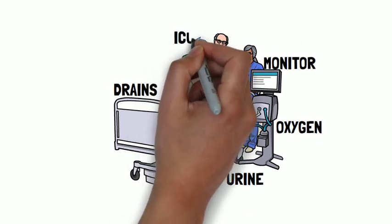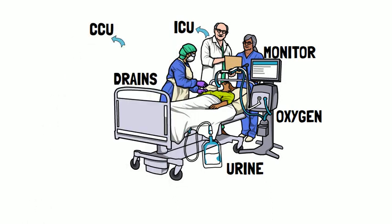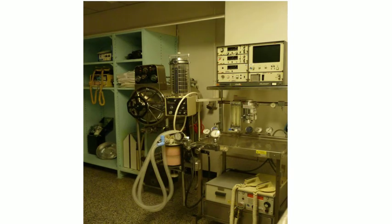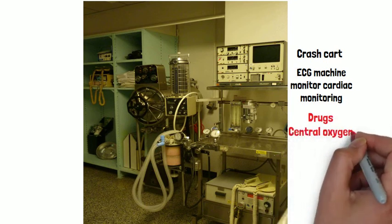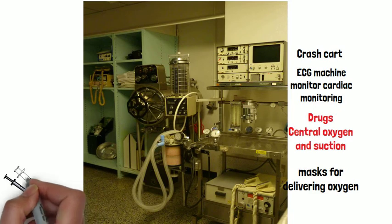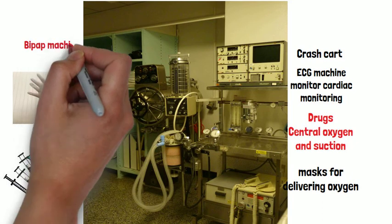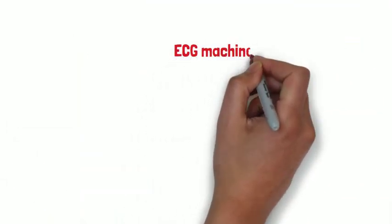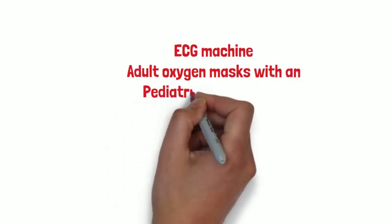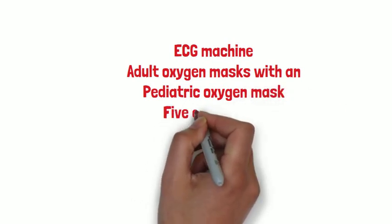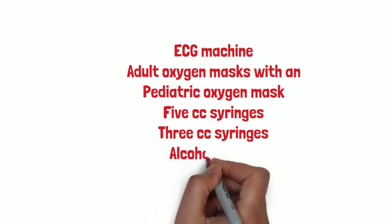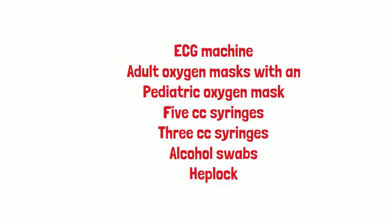The minimum equipment and drugs that should be readily available in the recovery area include a crash cart and intubation trolley, a BiPAP machine, and equipment for taking an ECG and continuous heart monitoring. Essential drugs include atropine, succinylcholine, midazolam, ephedrine, and epinephrine. Adult and pediatric oxygen masks, sterile and disposable syringes, cannula, hep lock, alcohol swabs, gauze pieces, sterile and non-sterile gloves, hand sanitizers, and disposable sharps containers should be available at every station.